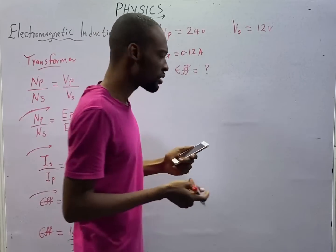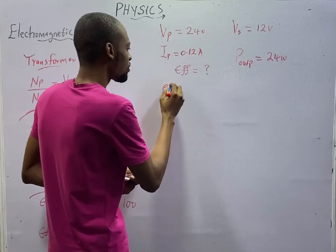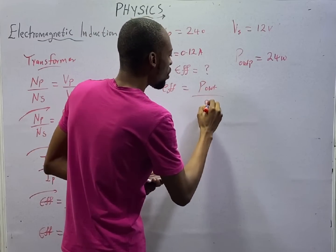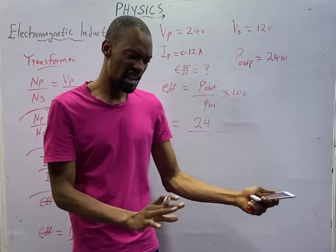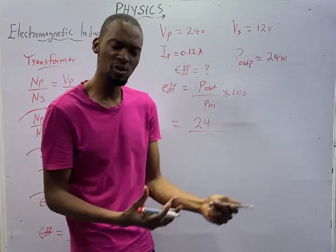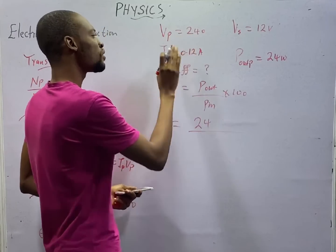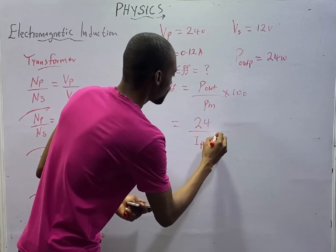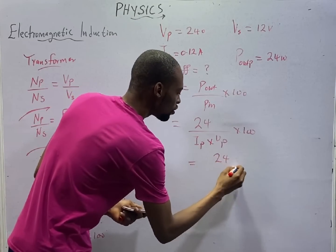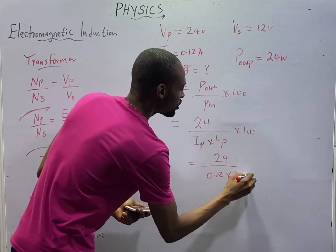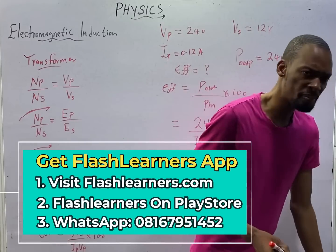Since a power of 24 watts is supplied to the lamp, power output equals 24 watts. Efficiency equals power output over power input times 100. Power input equals primary current times primary voltage: 0.12 amps times 240 volts. So efficiency equals 24 over (0.12 times 240) times 100, which gives 83.3%.